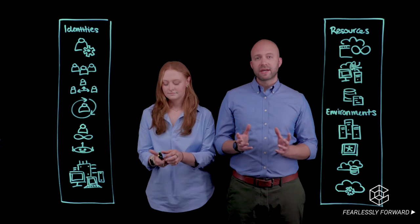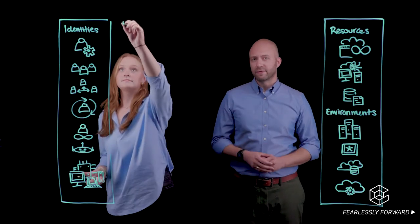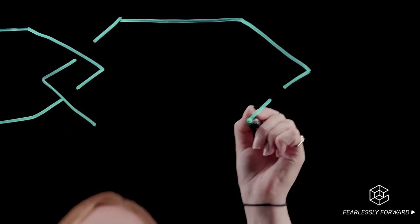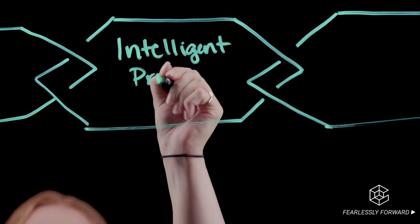Identity security breaks down barriers between key security categories, such as privileged access management or PAM and access management, and brings them together in a modern unified platform. With intelligent privilege controls at the center, identity security covers the following: